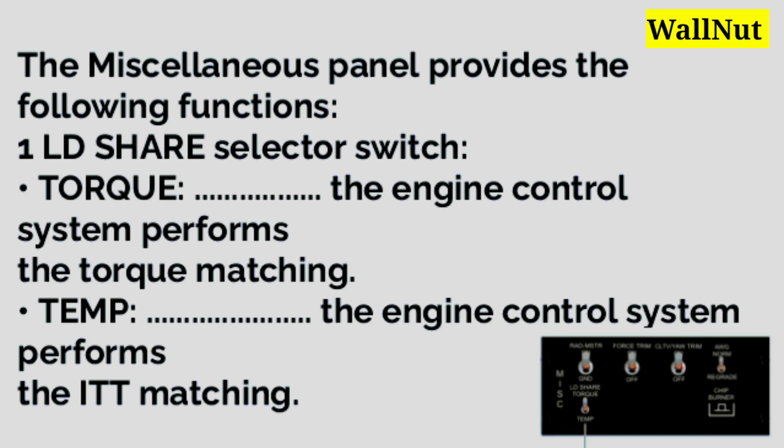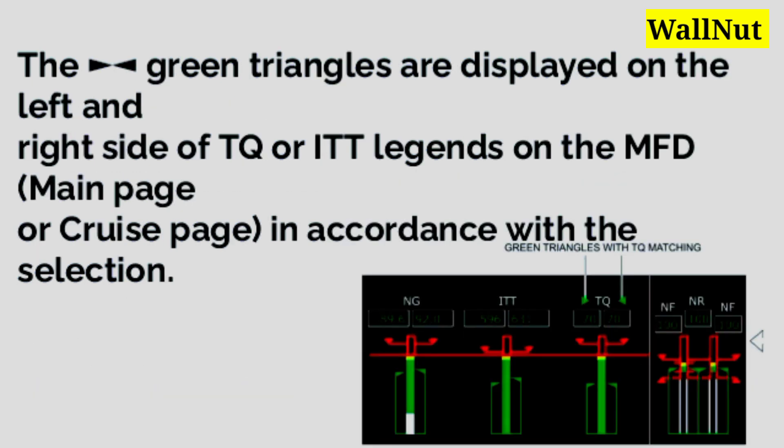The functions of the miscellaneous panel: Load sharing selector switch. Torque — the engine control system performs torque matching. Temp — the engine control system performs ITT matching. The green triangles are displayed on the left and right side of TQ or ITT on the MFD main page or cruise page in accordance with the selection.